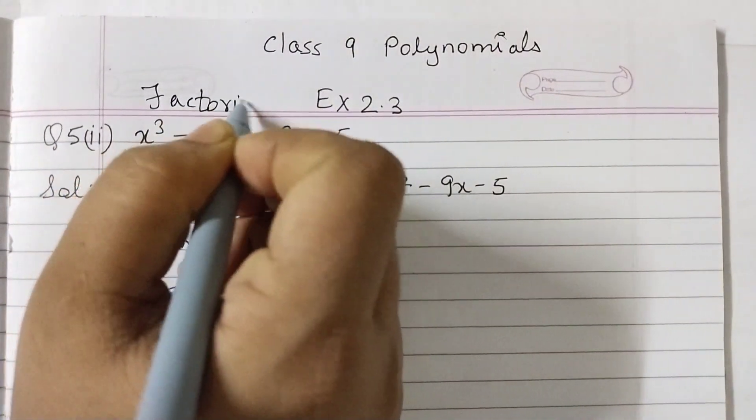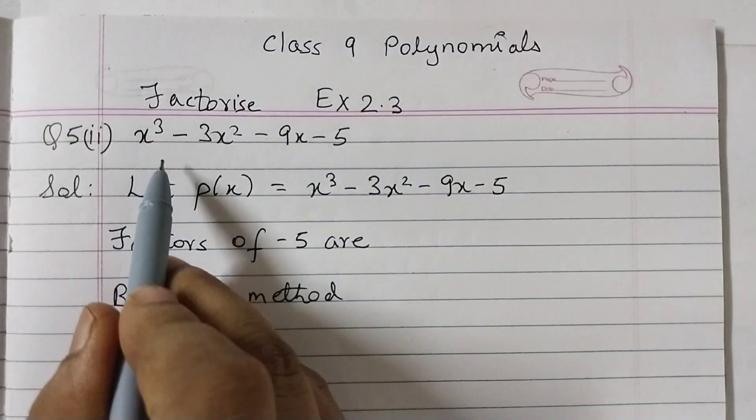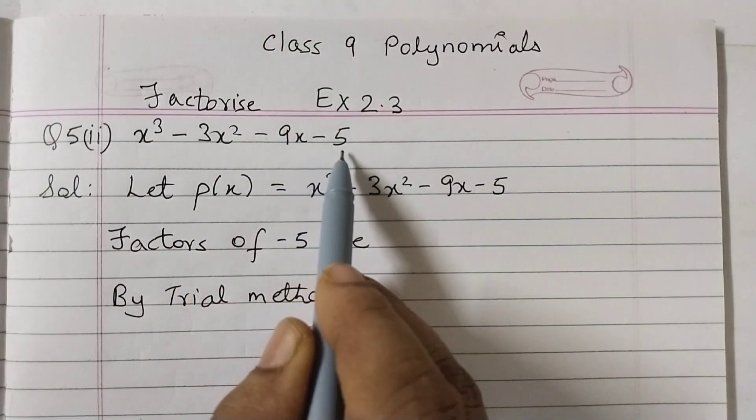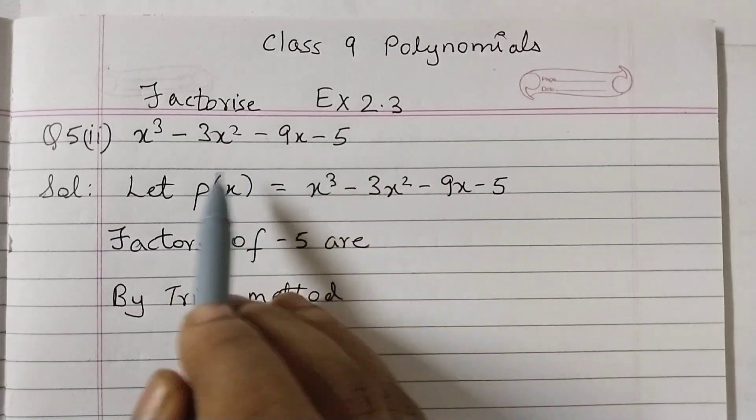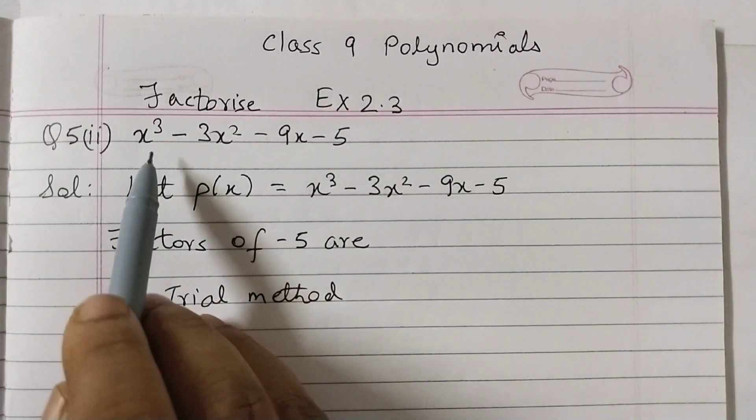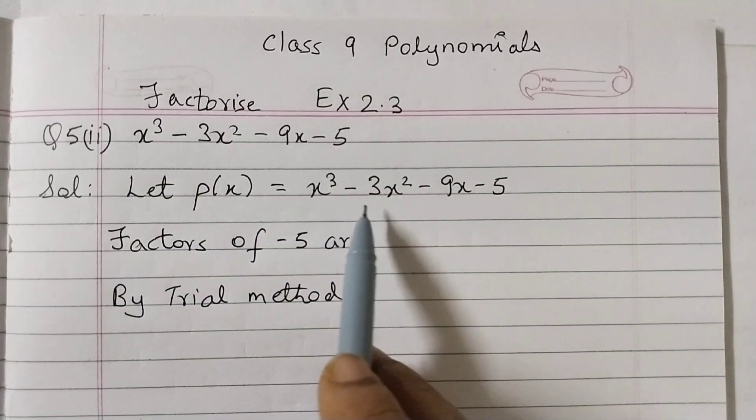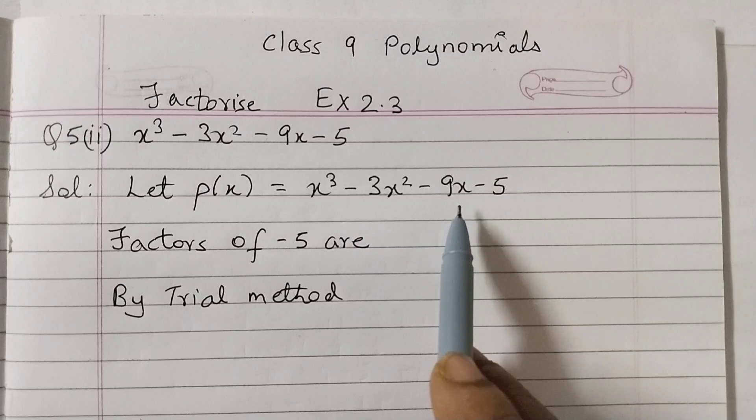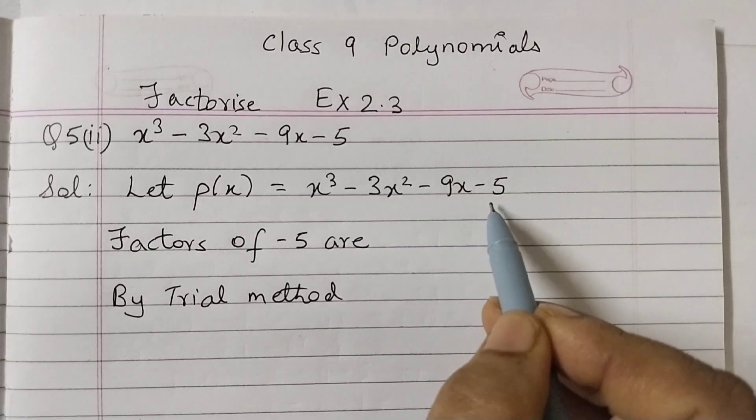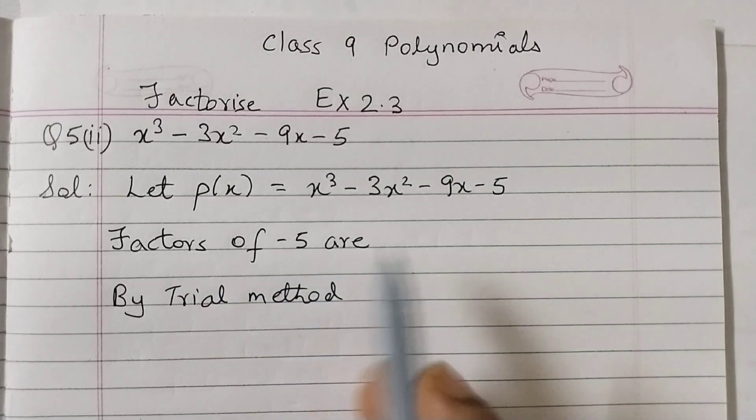So we need to factorize x cubed minus 3x squared minus 9x minus 5. This is a cubic polynomial, 4 terms are there. So the first step is take this as P of x equals to the polynomial. Next, the constant is minus 5. So find the factors of minus 5.